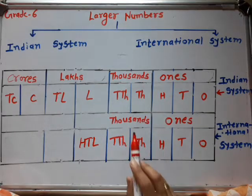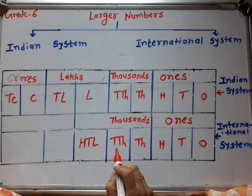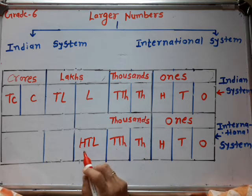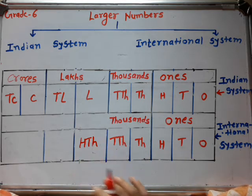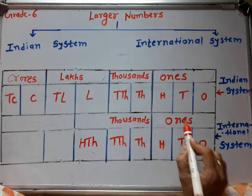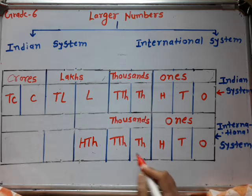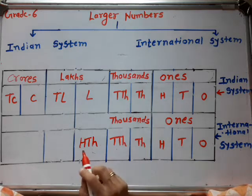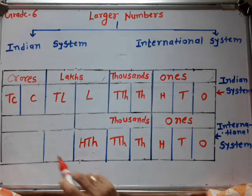So in the international system, the thousands period is divided into three places: thousand, ten thousand, and hundred thousand. After that, the next period is millions. The millions period is denoted by M.